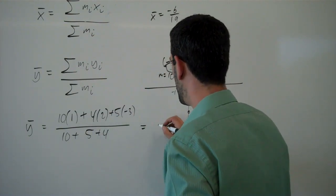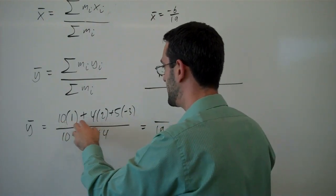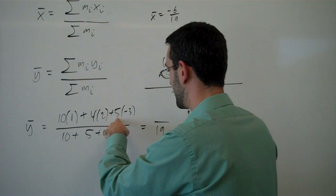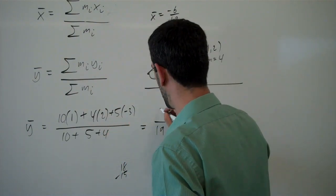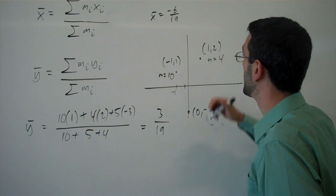Adding that up, we have 10 and 8 is 18, and a -15 here, gives me 3/19, as the ȳ.